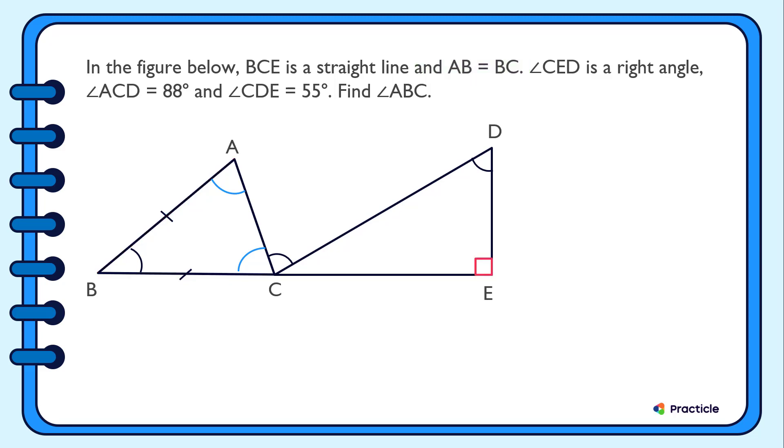Now reading on, we are given that angle CED is a right angle. Do you remember how big a right angle is? If you said 90 degrees, good job! Then what else do we know? We know that angle ACD equals 88 degrees and angle CDE equals 55 degrees.